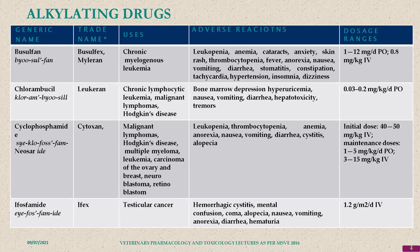We have to calculate the benefit-to-risk ratio and select drugs carefully because most are highly toxic. The dosage is 1 to 2 mg orally or 0.8 mg IV. Usually they are given intravenously as infusions.